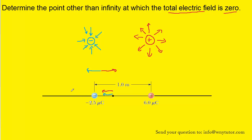That means we have to look either on the left side of the negative charge or on the right side of the positive charge. Let's consider a point on the right side of the positive charge. The positive charge would produce an electric field pointing away from it — directed to the right at this location. The negative charge would produce an electric field pointing towards it, so that would point to the left.